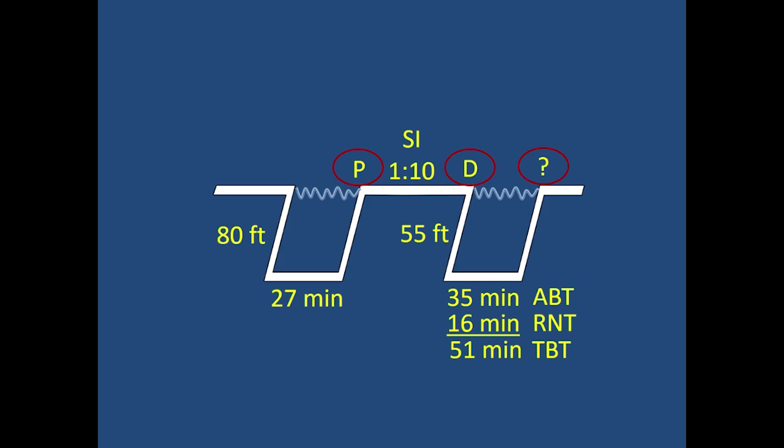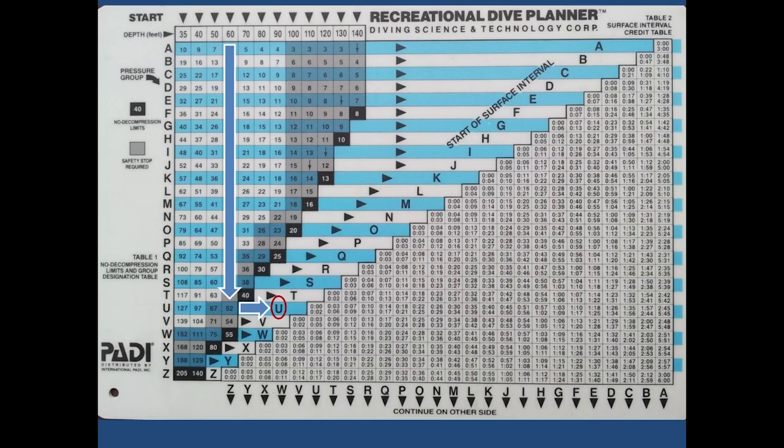In this case add 16 minutes residual nitrogen time to the 35 minutes actual bottom time. Now we have 51 minutes total bottom time and this is the information that we need to figure out the pressure group at the end of the second dive. So find the depth on table number one, 60 feet. Go down the column to find 51 minutes. You're going to round up to 52 minutes and move to the right hand side and find the pressure group U and that's going to be the answer.